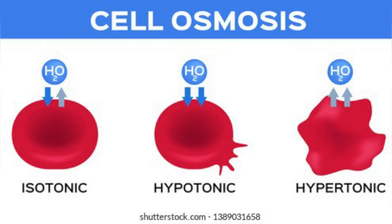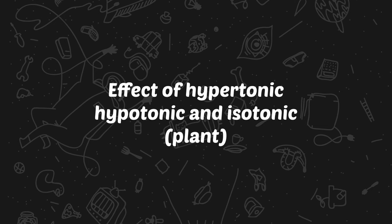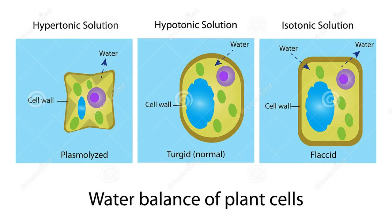Let's see the effect on plant cells. For hypotonic, it will turn to plasmolysis. For hypertonic, it will become turgid. For isotonic, it will turn to flaccid.